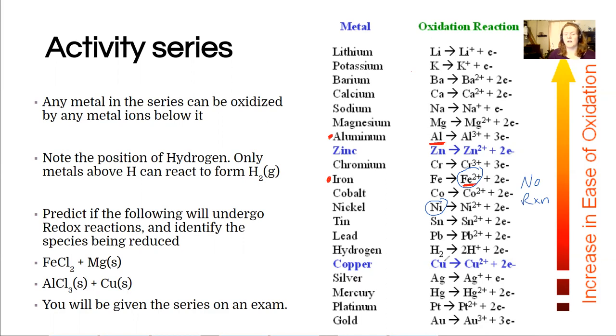So let's say I wanted to produce copper. If I want to produce copper, I have to choose an ion that's below it. So silver, mercury, platinum, or gold. The problem with that is, one of the reasons that copper is expensive is because these metals are either really toxic, mercury, or really expensive, like silver, platinum, and gold are really expensive. So finding a redox reaction that makes copper is a little bit of a challenge.